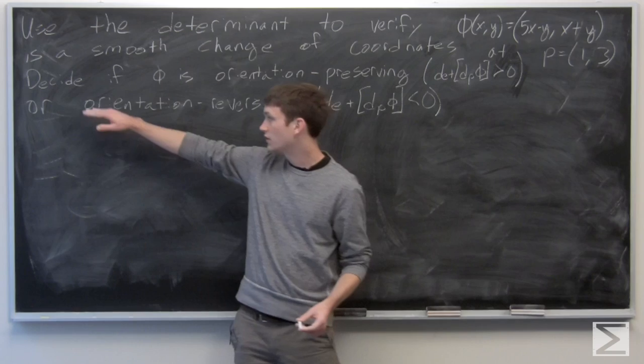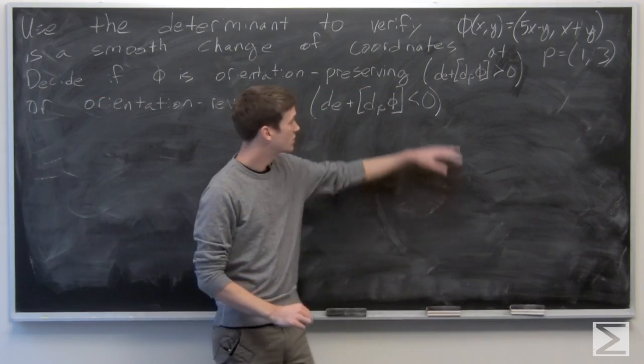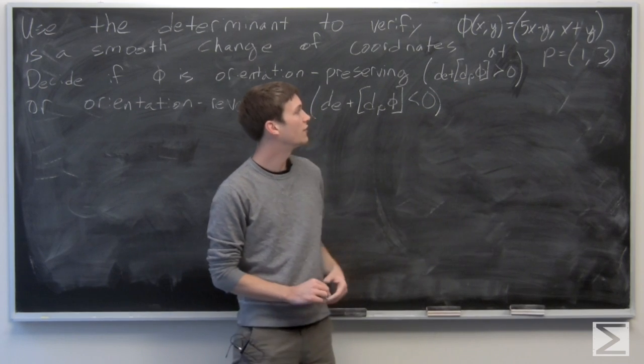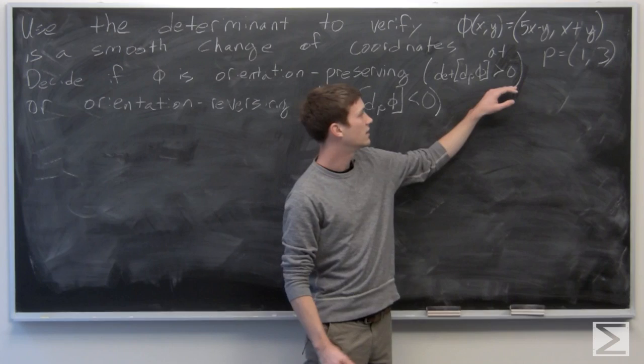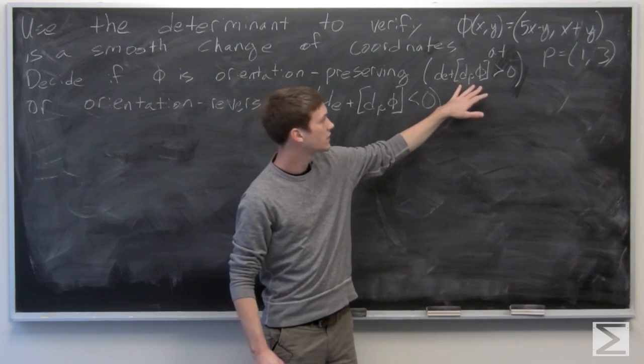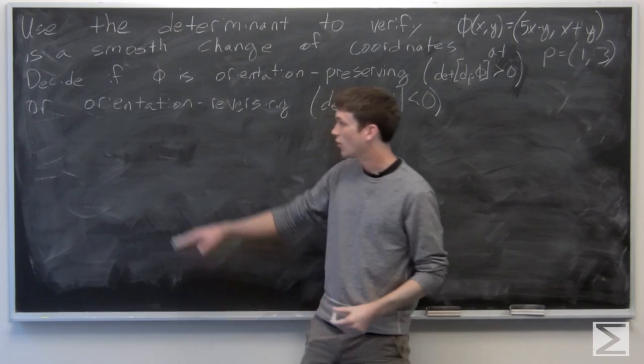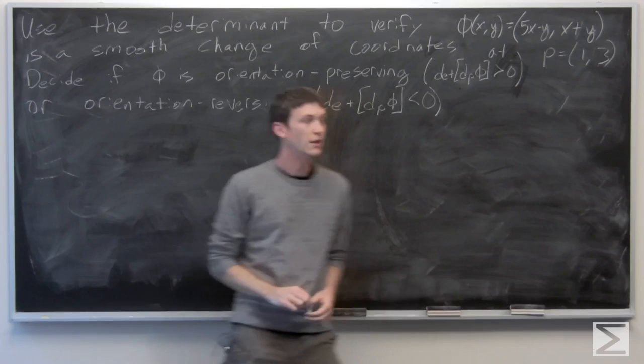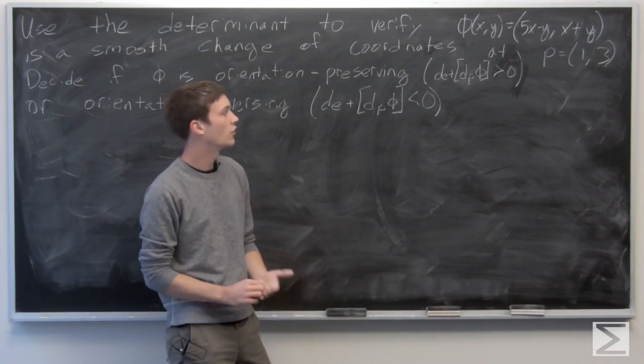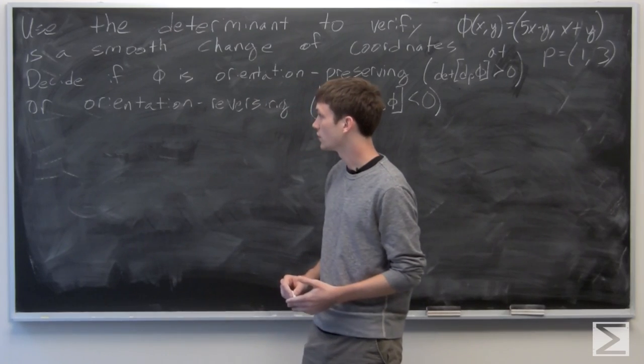And we want to also decide if phi is orientation preserving, which is when the determinant of the Jacobian matrix is more than 0, or orientation reversing if the determinant of the Jacobian matrix is less than 0.